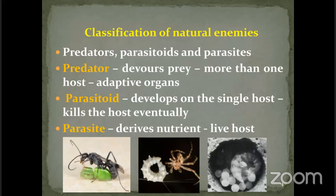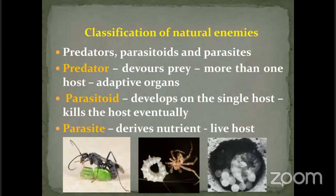Regarding classification of natural enemies — when do we call a natural enemy a predator, parasitoid, or parasite? A predator must consume the prey rapidly once captured, and must consume more than one host. It will also have adaptive organs — for example, in praying mantis or reduviids, the forelegs are modified into raptorial legs, allowing them to capture prey.